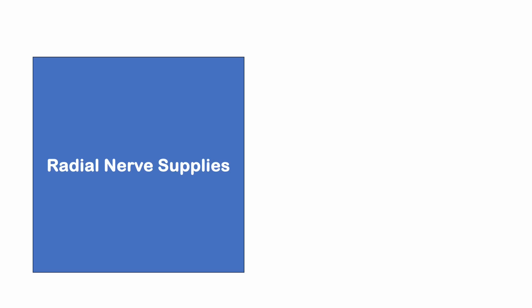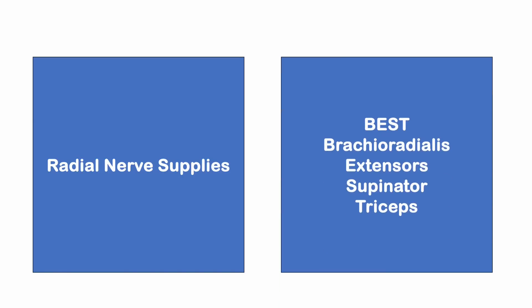The radial nerve supplies the BEST muscles: brachioradialis, extensors, supinator, and triceps.